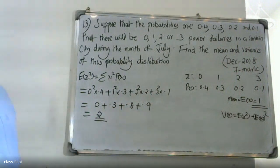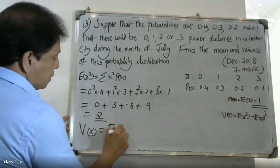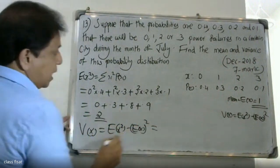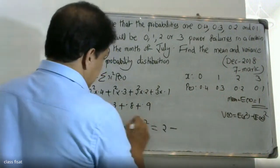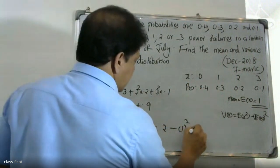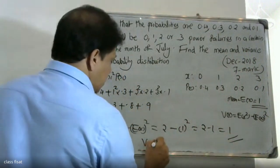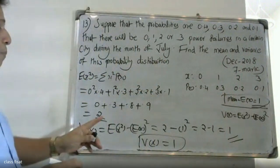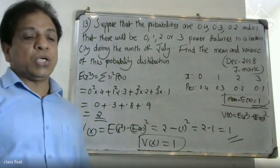The expectation of X square goes into the variance of X formula. Variance of X equals expectation of X square minus expectation of X whole squared. Expectation of X square is equal to 2. Since expectation of X equals 1, the variance of X equals 2 minus 1 squared, which equals 1. So the variance is equal to 1.